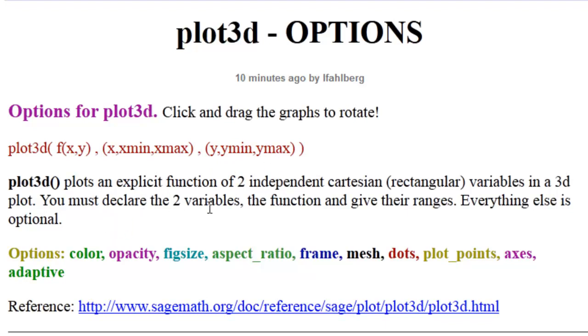So Plot 3D plots an explicit function of two independent Cartesian variables in a 3D plot. We must declare our two variables, define the function, and give their ranges. Everything else is optional. And we will look at these options. There's a reference on the SAGE page itself.